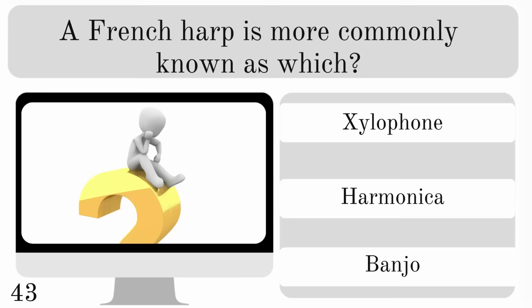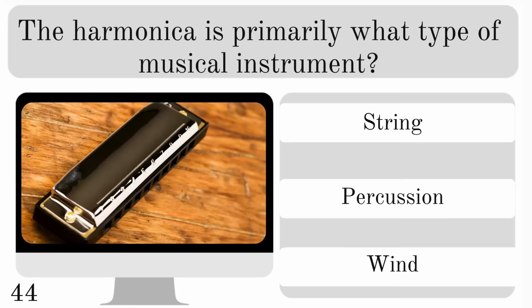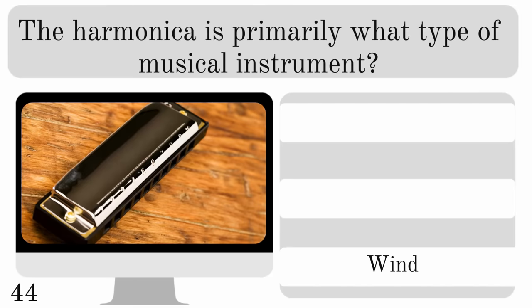A French harp is more commonly known as which instrument — a xylophone, harmonica or banjo? It is a harmonica. The harmonica is primarily which type of musical instrument — string, percussion or wind? The answer is a wind instrument.